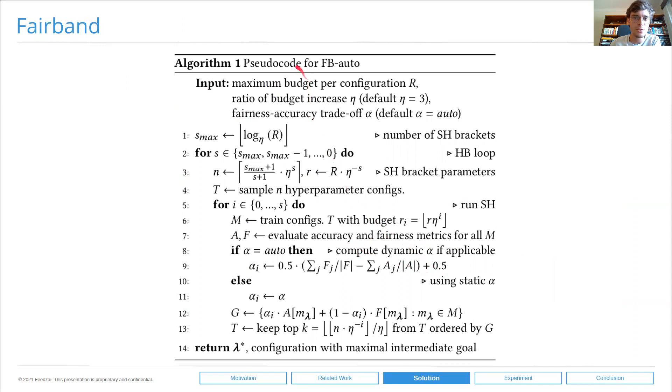And this is the pseudo code for FB Auto. We propose Fairband and the version of Fairband that employs this heuristic is dubbed FB Auto. It is similar to Fairband, which is similar to Hyperband. The main difference being that the alpha value is computed at each successive halving iteration and each bracket independently.